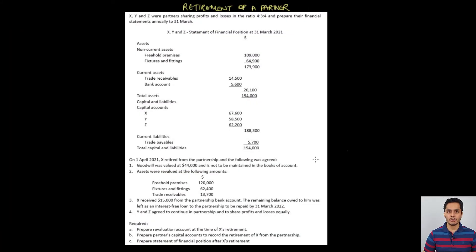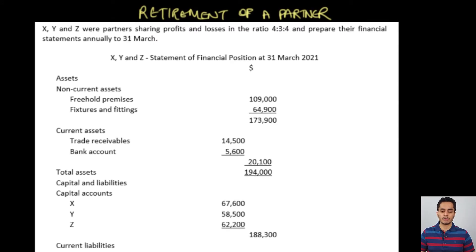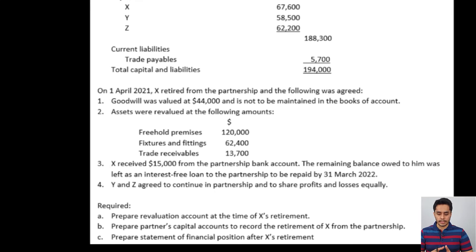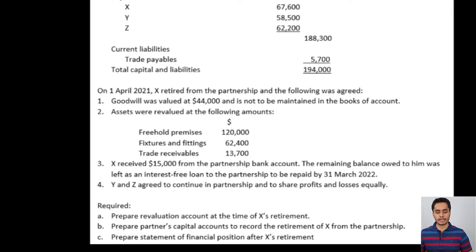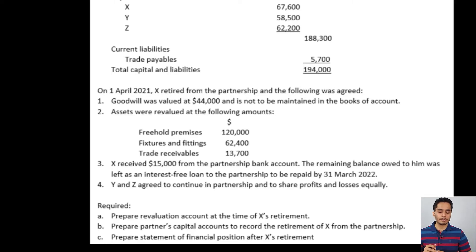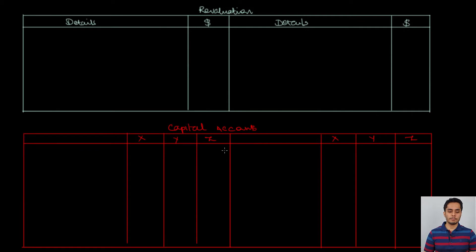Let's look at a solved example. X, Y and Z are the existing partners of a firm. Their old profit sharing ratio is 4:3:4. The balance sheet is given just before the retirement of X. Goodwill value is given, the revalued values of assets are given, X was paid 15,000 immediately from the bank account, and the balance was transferred to his loan account. Y and Z continued the firm with a new profit sharing ratio of 1:1. We will prepare the revaluation account, then the capital account of the partners, and then the balance sheet of the new firm.